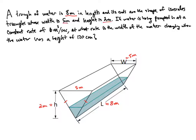So we have all of that. It says if water is being pumped in at a constant rate of 6 cubic meters per second, so that's how the volume of the water is changing. So I'm going to say V prime is equal to 6 cubic meters per second.